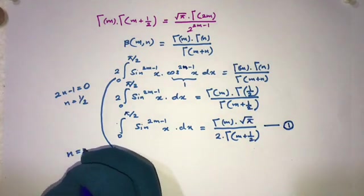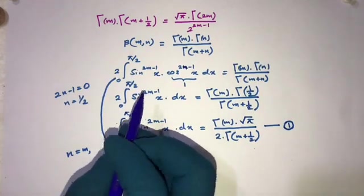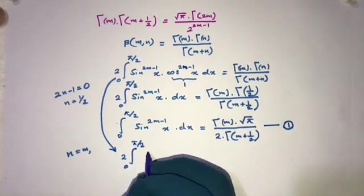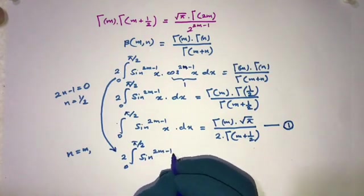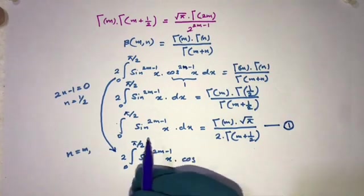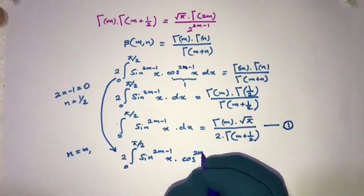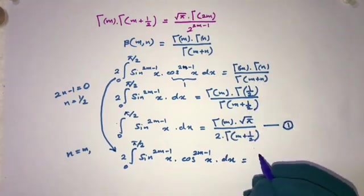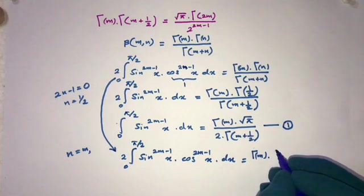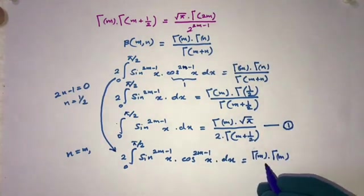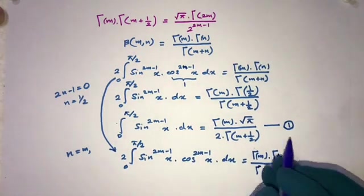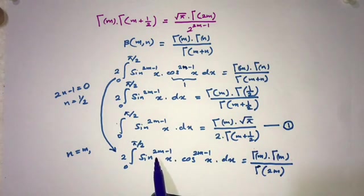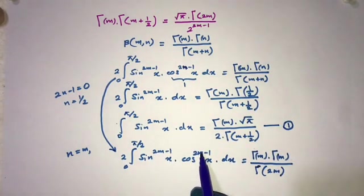Now I am going to take n equal to m. So we can write 2 times the integral from 0 to pi over 2 of sine to the power 2m minus 1 of x, times cosine to the power 2m minus 1 of x, dx, which equals gamma of m times gamma of m over gamma of m plus m, i.e., gamma of m squared over gamma of 2m.